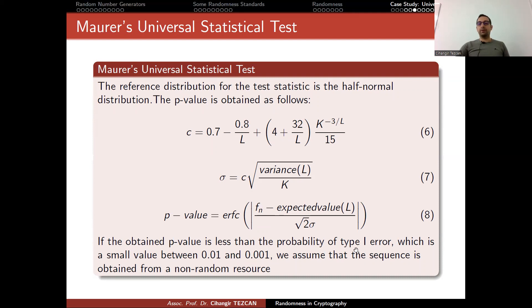If the obtained p-value is less than the probability of type 1 error, which is a small value between 0.01 and 0.001, this is your choice. You're choosing something - because if you choose this, this means that random values will fail this test with a probability of 1 over 100. If you choose this, a random value will fail with probability 1 over 1,000. We assume that the sequence is obtained from a non-random resource if it is higher than this value.